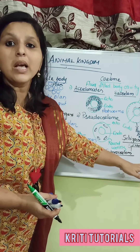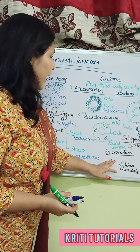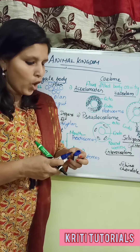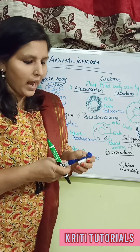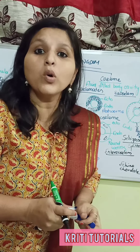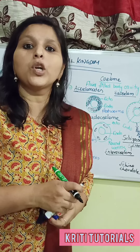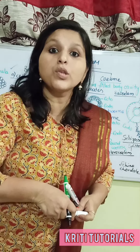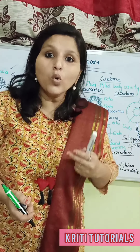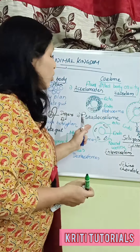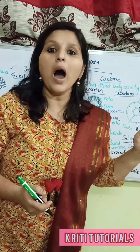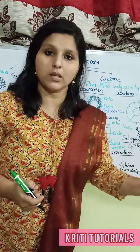In schizocoelome, the mesodermal layer is split. For enterocoelome, examples include echinodermata and chordata. There is also another type called haemocoelome, where the true coelom is reduced to pseudocoelom, and the examples are arthropoda and mollusca.